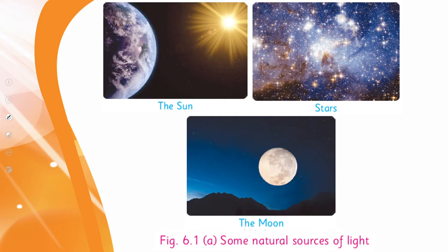Here you can see that the light of the sun falls directly on the Earth. Stars shine at night, and the moon reflects the light of the sun back to the Earth. So which are the natural sources of light? Sun, stars, and moon are the natural sources of light.